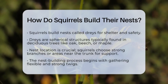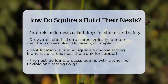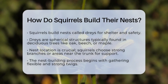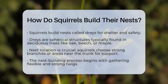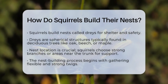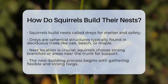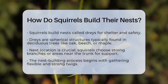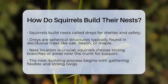These nests are typically found in sturdy deciduous trees like oak, beech, or maple. The location is important, as squirrels often choose spots in the forks of strong branches or close to the trunk for added support.